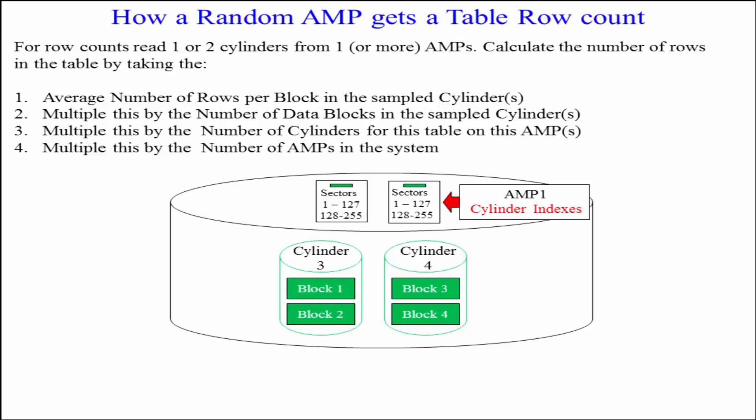How a random amp gets a table row count. For row counts, read one or two cylinders from one or more amps. Calculate the number of rows in the table by taking the average number of rows per block in the sampled cylinders. Multiply this by the number of data blocks in the sampled cylinders, then by the number of cylinders for this table on this amp, then by the number of amps in the system.